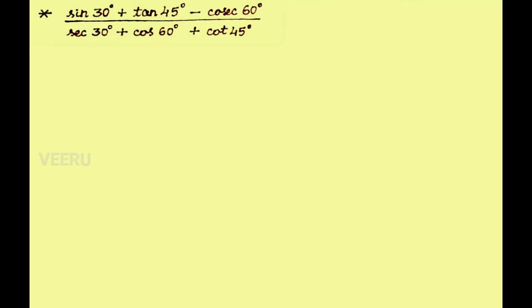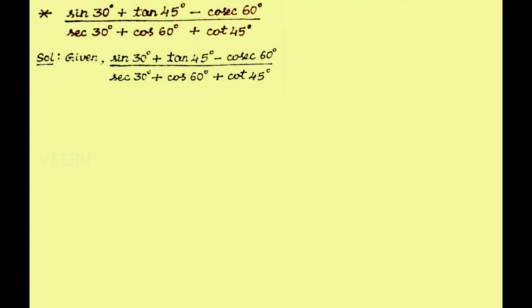See the next problem: sin 30 degree plus tan 45 degree minus cos square 60 degree, whole divided by secant 30 degree plus cos 60 degree plus cot 45 degree. In the solution, take the given as it is.